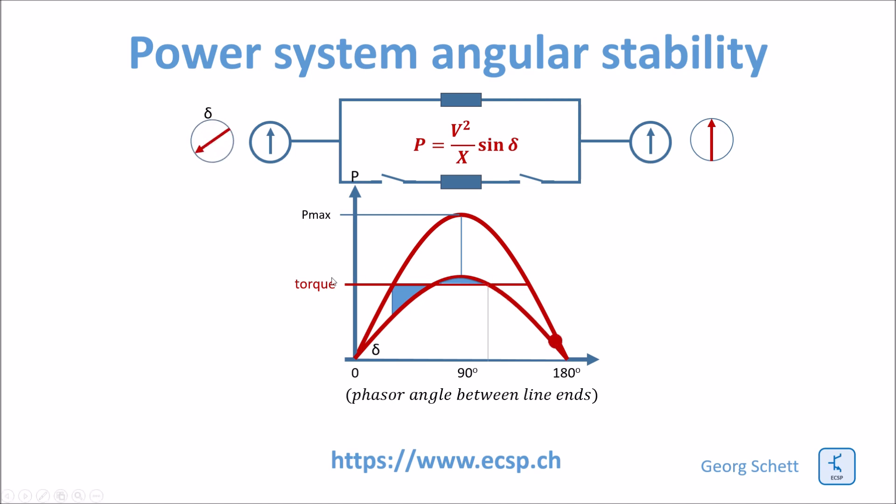So here you see now the relation, how these two triangles come into play. So we have originally selected a set point which was much too high. So the original angle was much too high for two lines in parallel, because we have always to consider the risk of losing one of the parallel lines.